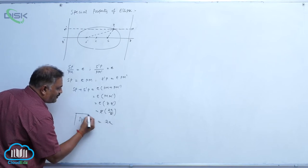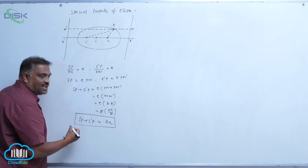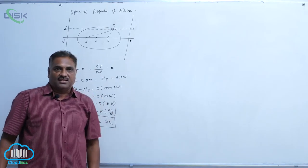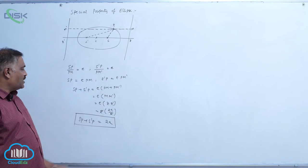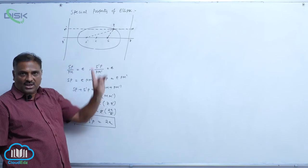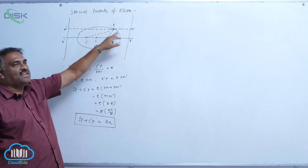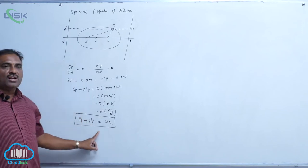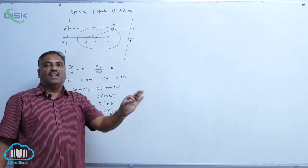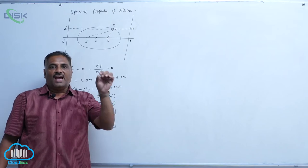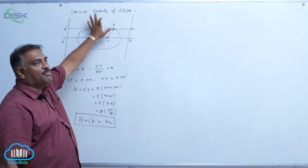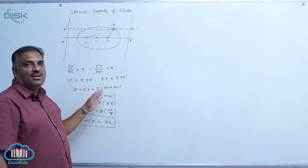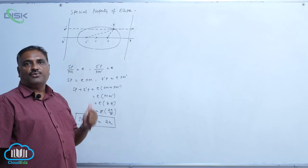SP plus S dash P is equal to 2A. According to our standard ellipse equation, 2A is nothing but the length of the major axis. SP is one focal distance, S dash P is another focal distance. Sum of the two focal distances is equal to the length of the major axis — a unique property satisfied by the ellipse equation, very important even for board exam purposes.